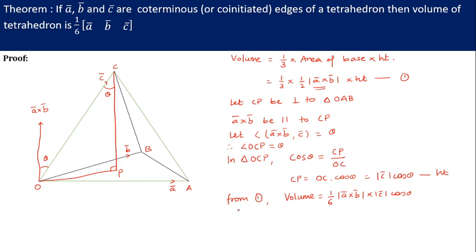So A cross B is the vector perpendicular to A bar and B bar. C bar is the vector along OC bar and theta is the angle between A cross B and C bar. Then volume can be written as - now if you remember the theory of the dot product, then this is the dot product between the vector A bar cross B bar and C bar. So it becomes A bar cross B bar dot C bar divided by 6 is the volume of the tetrahedron.